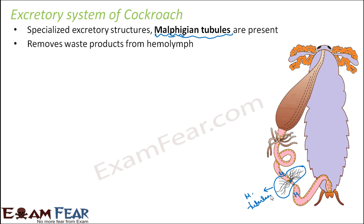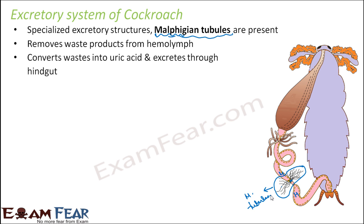They remove waste products from hemolymph, convert the waste into uric acid, and excrete it through the hindgut. It passes through the ileum, colon, and rectum and is finally excreted out through the anus. Cockroach is termed uricotelic because it converts waste products into uric acid.